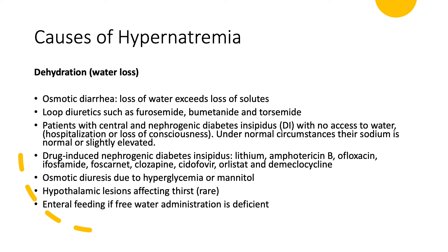Osmotic diuresis, like osmotic diarrhea, can cause hypernatremia — such as in patients with hyperglycemia who start urinating a lot, or those given mannitol, which is used less often nowadays. Hypothalamic lesions that affect thirst, where the patient doesn't feel thirst, can also cause hypernatremia, but this is very rare and should be way at the bottom of your differential diagnosis list.